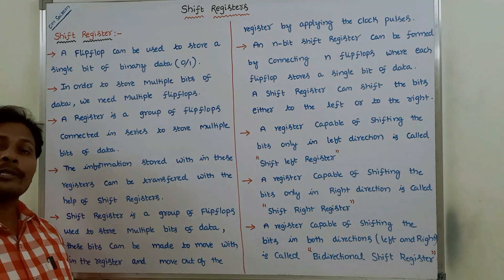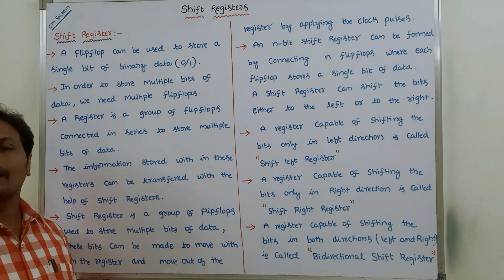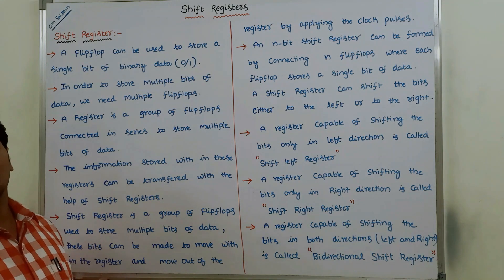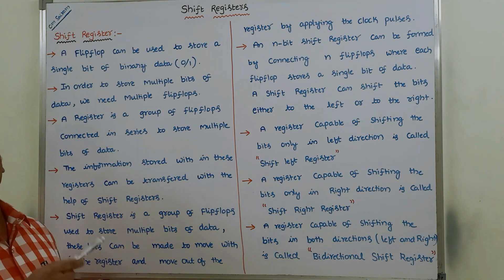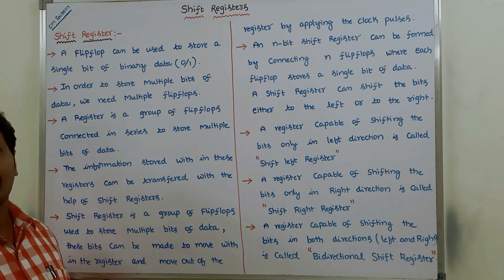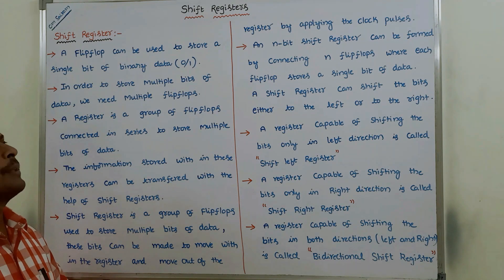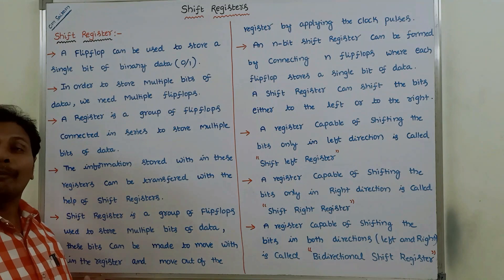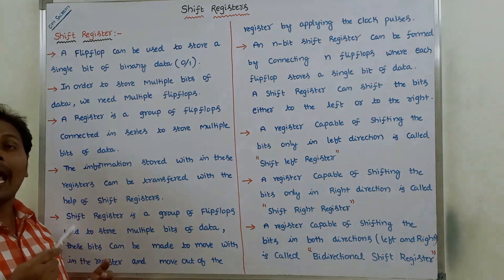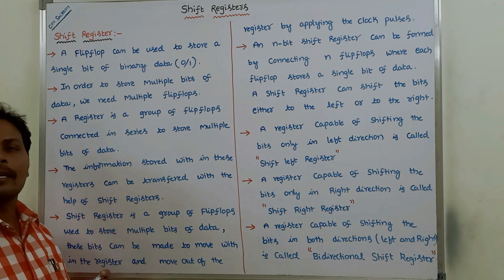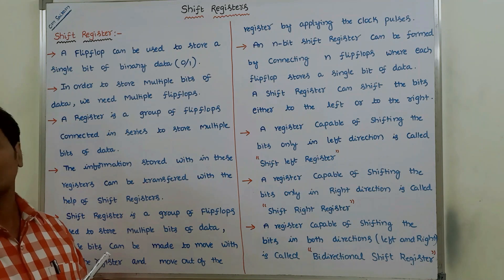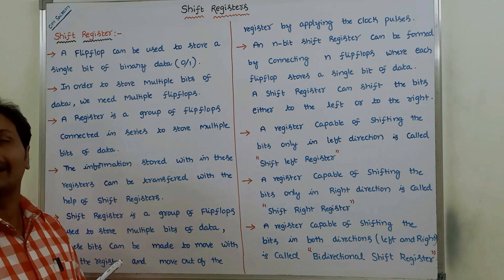A shift register is also a collection of flip-flops used for storing multiple bits of data. In addition to storing, that data can be shifted either in left or right direction with clock pulses. An n-bit shift register can store n bits of data and contains n number of flip-flops connected in series.